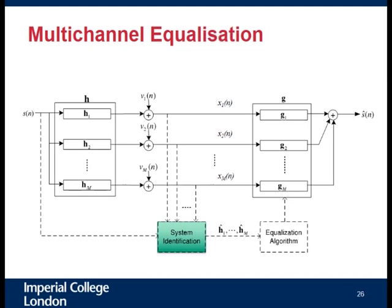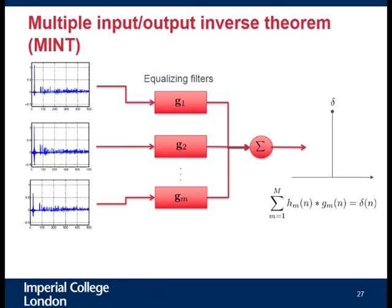System identification is currently an unsolved problem. We can estimate these filters to some extent, but saying we can estimate them perfectly is a long way from the truth. Nevertheless, we'd like to use these estimates to design a set of filters — one filter per input channel — such that when we sum the outputs we get a perfectly equalized signal: all reverberation removed, just the original dry speech. The classic first approach is to take estimated or measured impulse responses, find filters whose output is exactly an impulse, and apply the speech through these filters to get a dereverberated signal.